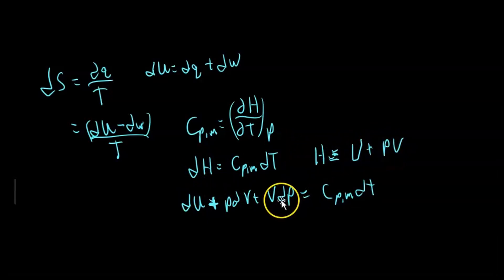So du equals Cp,m dT minus pdv. If we assume a reversible process - that's key - where there's pressure-volume work only, dw is negative pdv. I'm going to substitute this in for du.